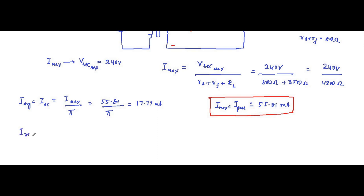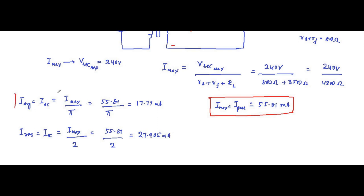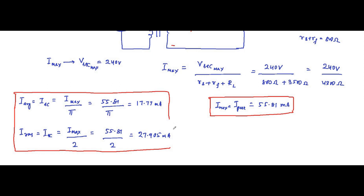The RMS value, also called the AC value, equals I_max divided by 2. Always remember the formulas. So 55.81 milliampere divided by 2 equals 27.905 milliampere. So we have got the average value (the DC value) and the RMS value (the AC value).